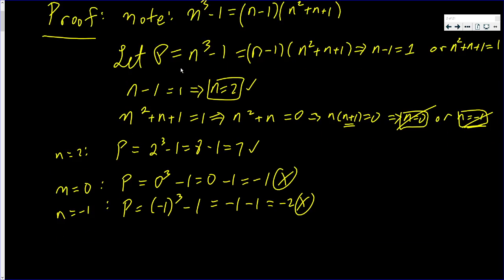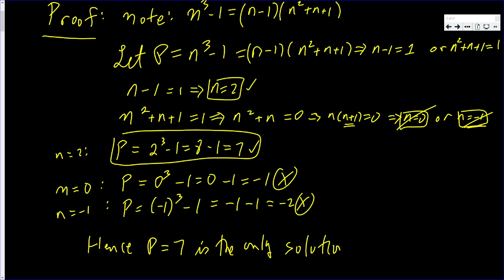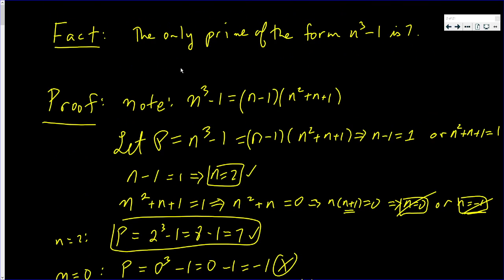So our conclusion is that P can be 7. Hence, P equals 7 is the only solution. And that completes the proof. Only the prime P is equal to 7 is of the form n cubed minus 1.